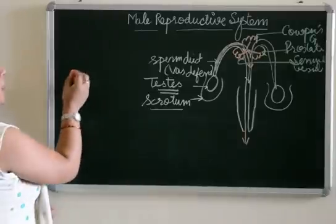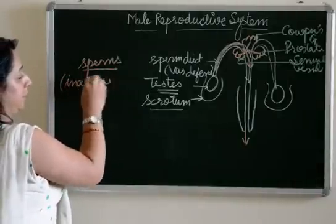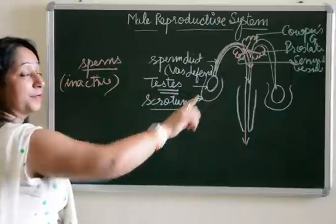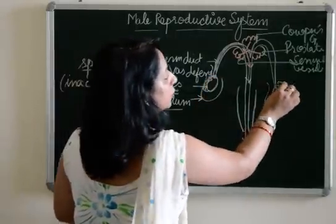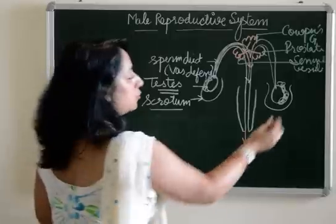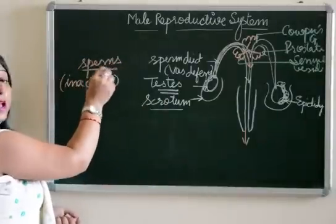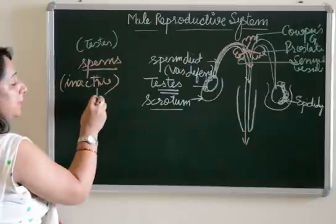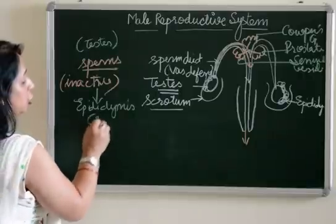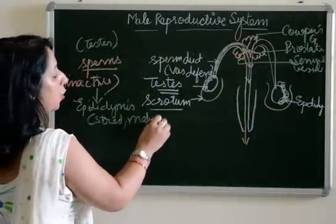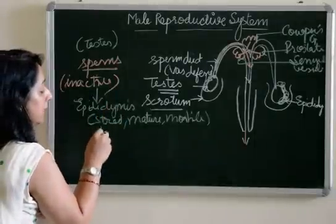When the sperms move from the testes they are just sperms and are inactive. Over the testes there is a coiled structure known as the epididymis. The function of the epididymis is: sperms are formed in the testes, and from the testes when they are active they reach the epididymis. In the epididymis they are stored, they become mature and motile — that is, they can move — their tail appears.